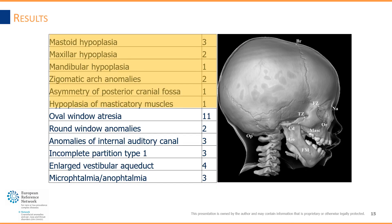Concerning the characteristic features of the oculoauriculovertebral spectrum, the study detected the presence of mastoid hypoplasia, maxillary hypoplasia, mandibular hypoplasia, anomalies of the zygomatic arch and of the posterior cranial fossa, and hypoplasia of the masticatory muscles.